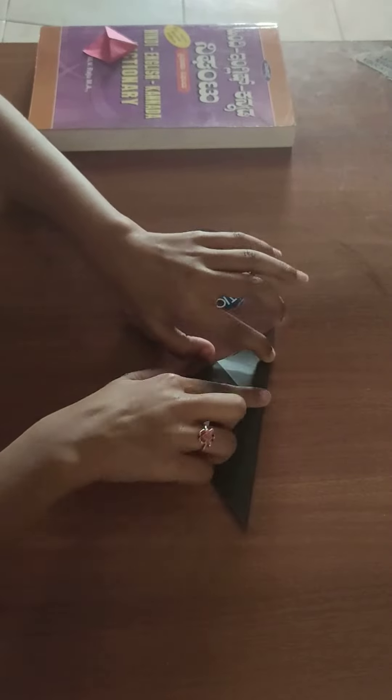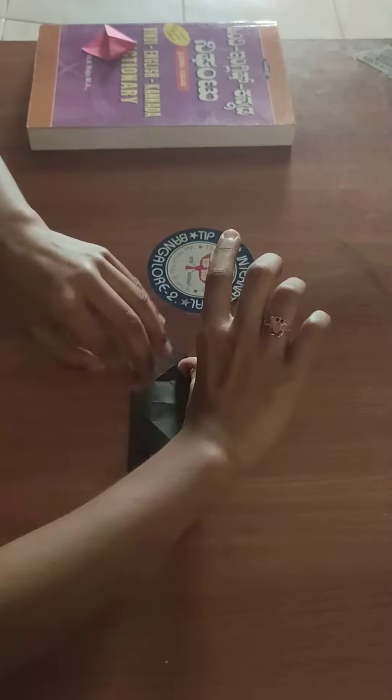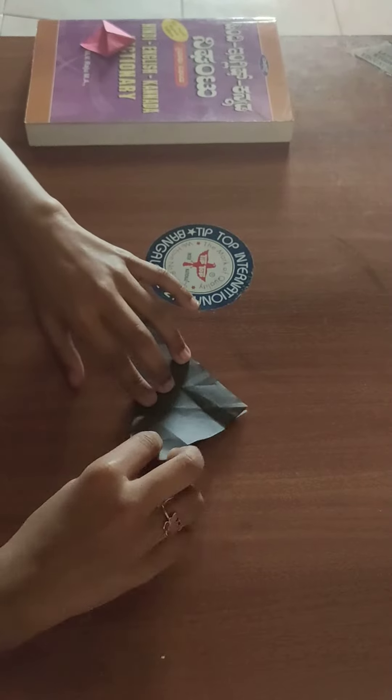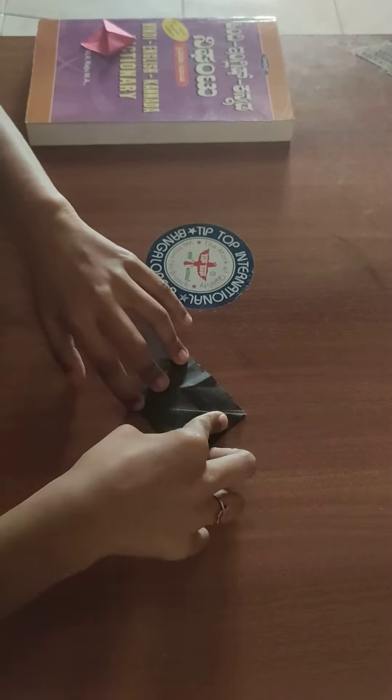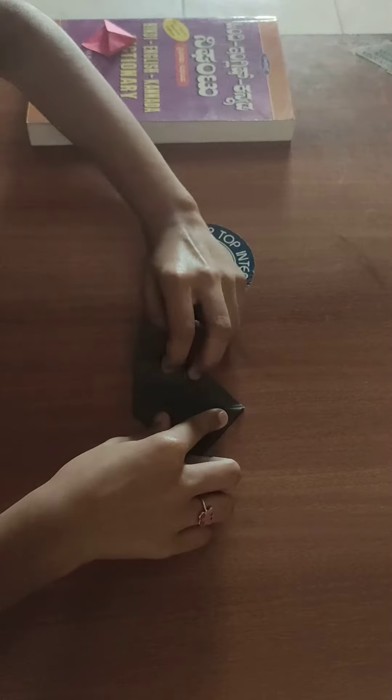Now open the paper and fold it like a triangle again. Now we have to take the triangle and make a small diamond shape.